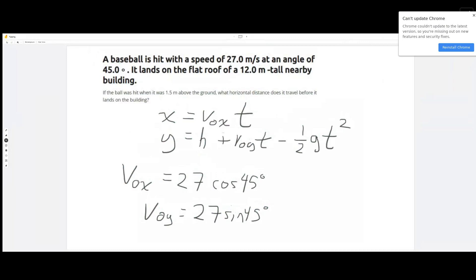Let me make myself some room here. We are going to say that the x position of our projectile is equal to 27 cosine 45 degrees times time value.